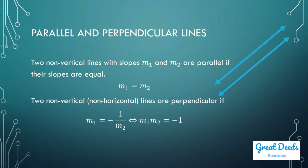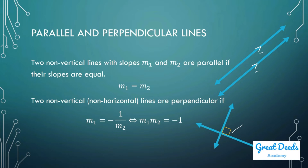In geometry, we indicate parallel lines by drawing feathers pointing in the same direction. When you see lines with these feathers, they are parallel. For perpendicular lines, we draw a small square to indicate the two lines make a right angle, and the product of their slopes is negative 1.